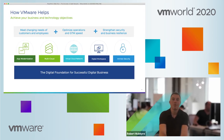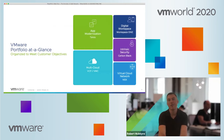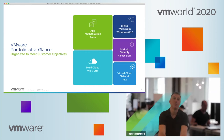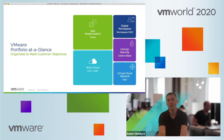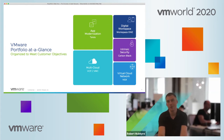Our portfolio at a glance covers five broad categories: app modernization, digital workspace and endpoint management, intrinsic security, virtual cloud network, and multi-cloud. My focus today is going to be on the multi-cloud pillar, and we are going to focus on some of the challenges that we're hearing from you and talk about ways that we can help you solve them.